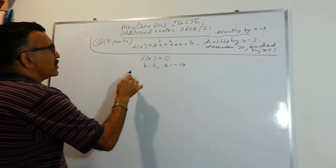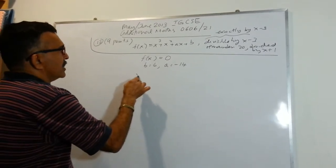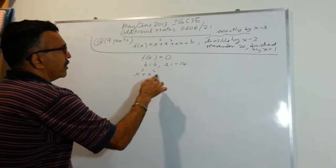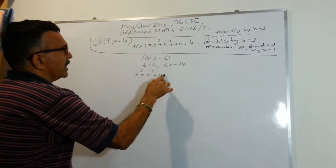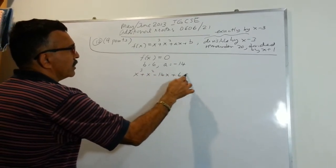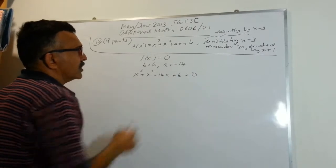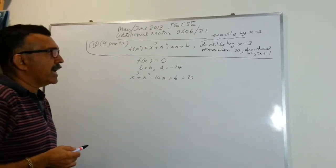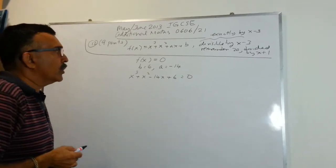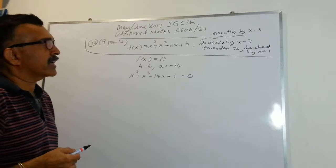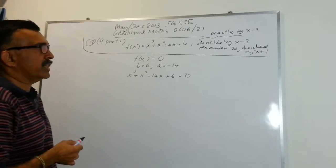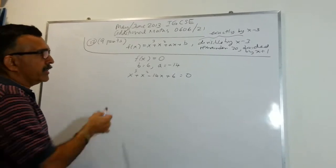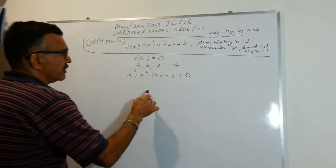So we are asked to solve the equation x cubed plus x squared minus 14x plus 6 equals to 0. This is a cubic equation, and we know that this is exactly divisible by x minus 3, so let's go ahead and do some long division.